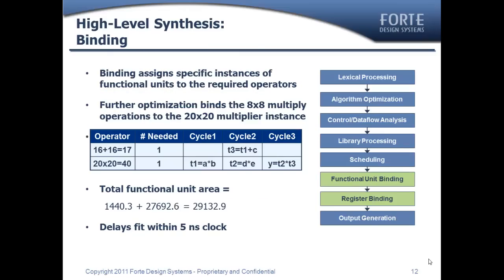Now we proceed to binding, where each operation in the control data flow graph gets mapped to actual functional units that will appear in the Verilog RTL. The binding algorithm notes there are three multiply operations in three different cycles with non-overlapping lifetimes, so it attempts to share all three onto a single multiplier in the Verilog output. The two 8x8s get mapped to the 20x20 multiplier — a valid share — achieving exactly the same functionality with a significant area reduction. Total area is now down to 29k from the original 39k. This step-by-step refinement of schedule and binding dramatically improved the area of the design.